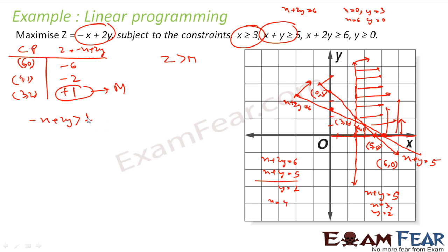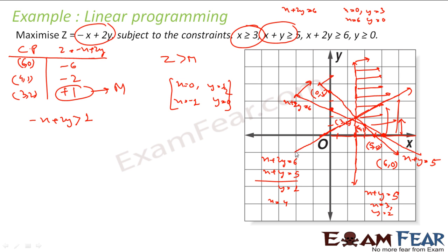To check if the maximum exists, I form the line -x + 2y = 1. Put x = 0, you get y = 1/2. Put y = 0, you get x = -1. Putting (0, 0): 0 is not greater than 1, so I am looking for the region away from the origin. Since there is overlap between this region and the feasible area, that means no maximum exists - the maximum does not exist for this problem.